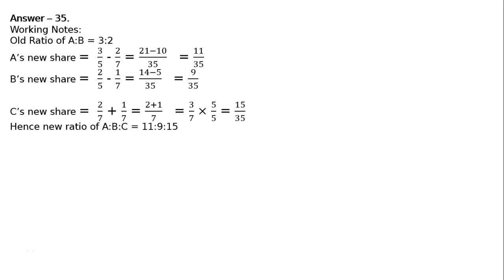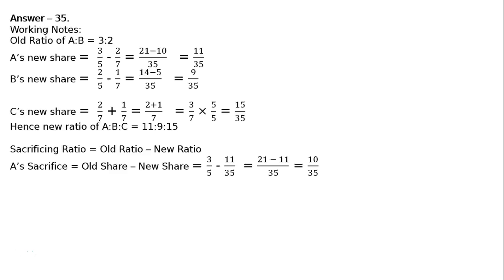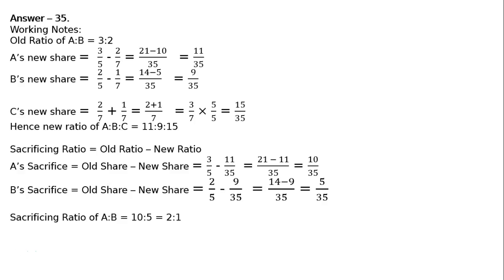B's sacrifice equals old share minus new share. Old share 2/5 minus new share 9/35 equals 5/35. Sacrificing ratio of A to B is 10 to 5, which equals 2 to 1.